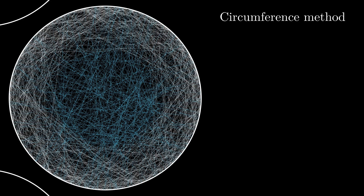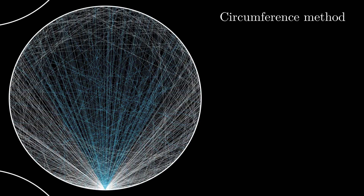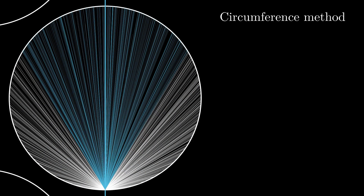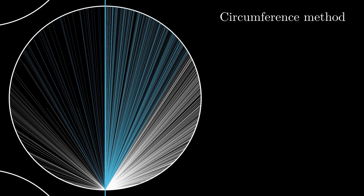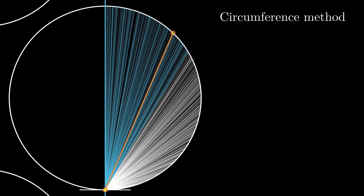Taking advantage of the circular symmetry, we can always rotate the chords so that the first point chosen is at the south pole of the circle. If we now draw a vertical line, we can again use the circle symmetry with respect to this line and only consider the chords to the right of the line. Drawing a tangent at the bottommost point of the circle, the angle the chord makes with the tangent is uniformly distributed between 0 and π/2.